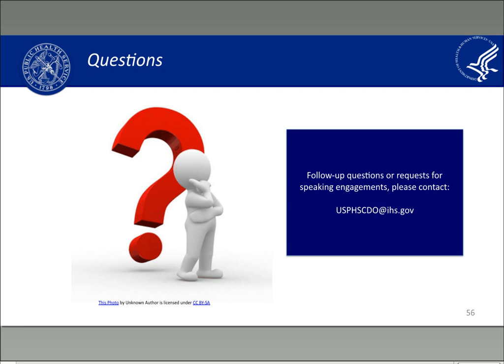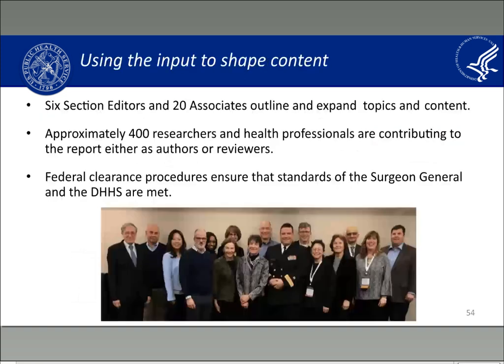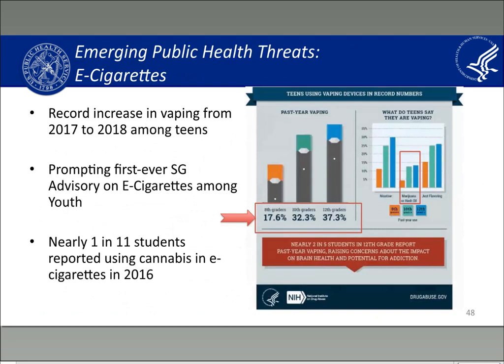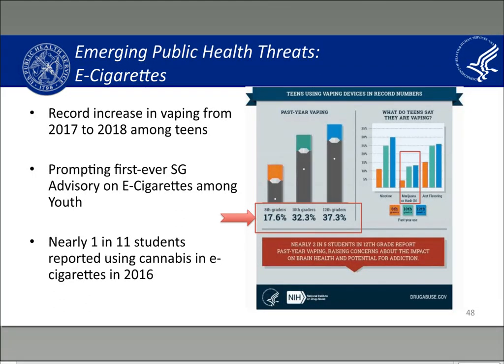If you want to unmute and ask questions verbally, now would be a good time — please press star six. There is one more question: regarding the e-cigarette statistic that nearly 1 in 11 students are using e-cigs for cannabis use — is that among students using e-cigs or among all students? Going back to that slide: it is 1 out of 11 students that are using e-cigarettes.